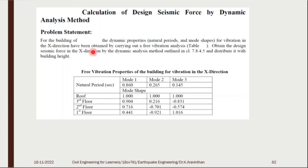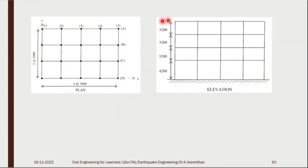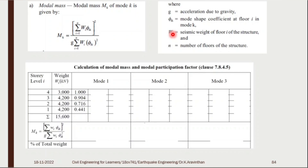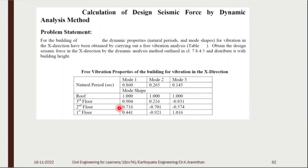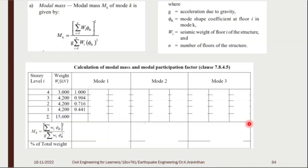Obtain the design seismic force in the X direction by dynamic analysis method. Distribute with the building height. Note that all the mode shapes are starting from 1 with respect to the roof. The roof has the largest displacement. With respect to the roof, the third floor displaces to less deflection — 0.9, 0.74, 0.44 — and the ground floor value will be 0.